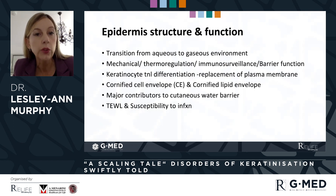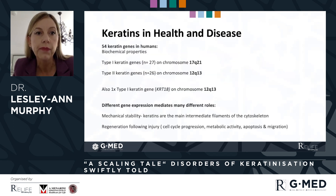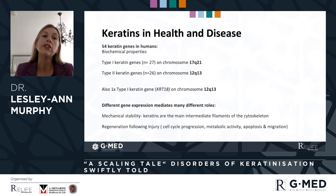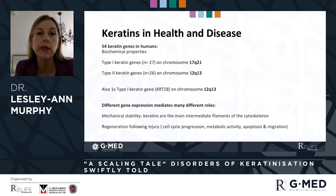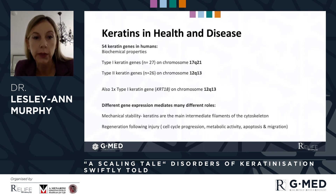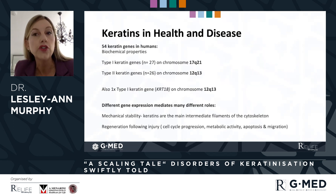Where one or both is compromised, increased transepidermal water loss and increased susceptibility to infection ensues. There are 54 keratin genes in humans, broadly characterized as types 1 and 2, and these form obligatory heteropolymers that form the basic building blocks for the intermediate filaments of the cytoskeleton that contribute to mechanical stability.